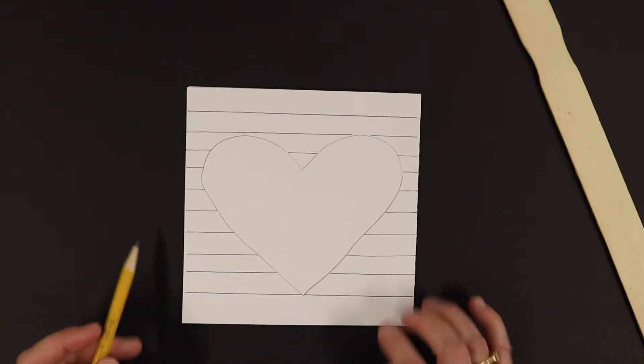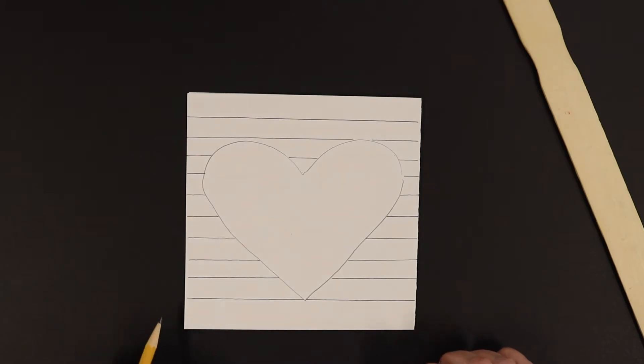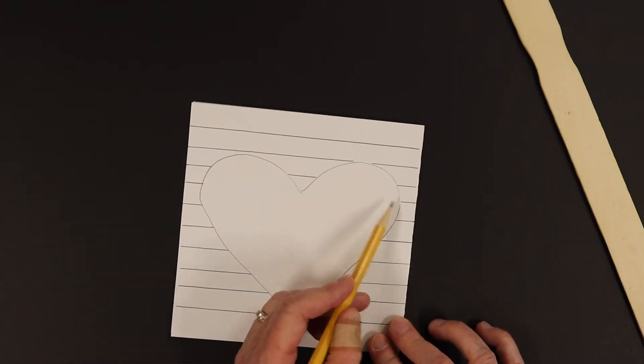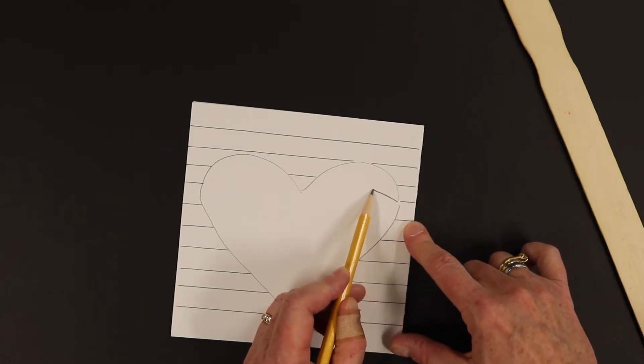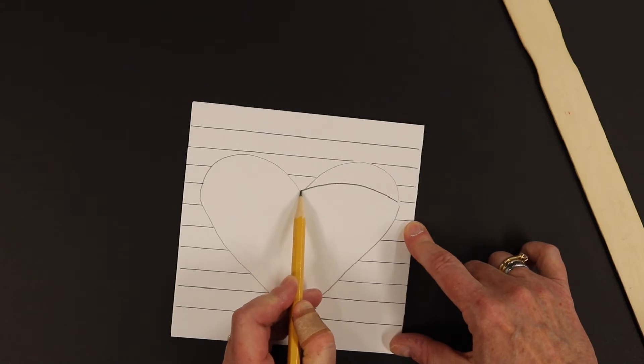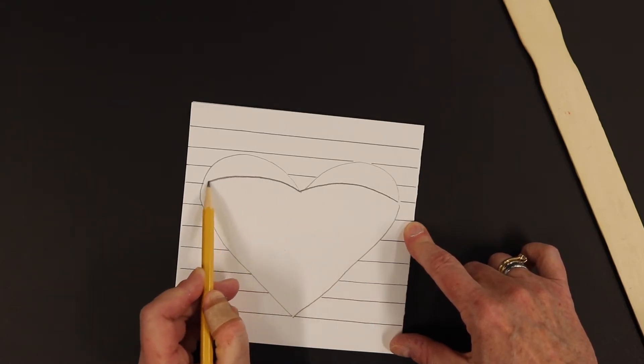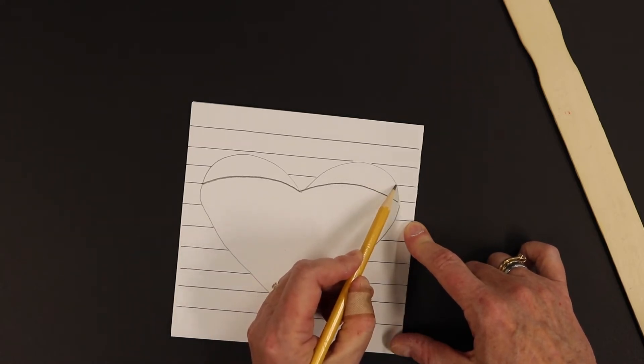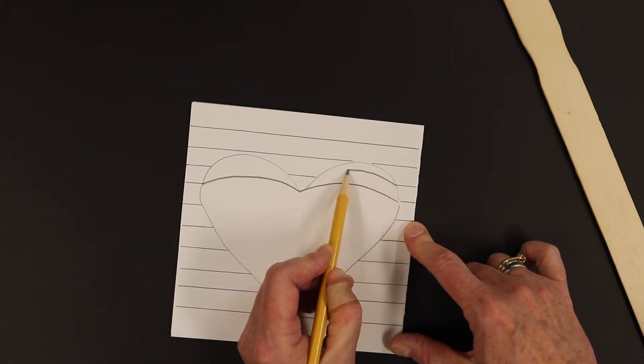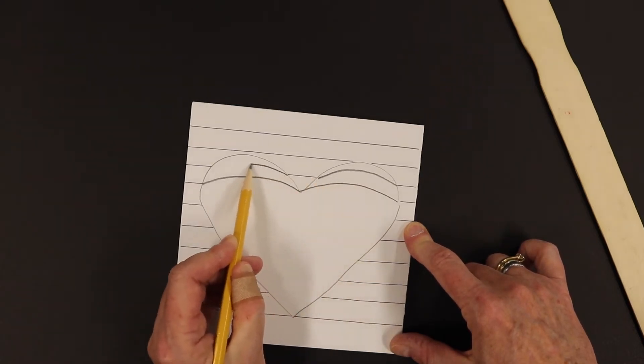Now we're going to, in order to make this heart look like it's three-dimensional and popping off the page, when we get to our heart, we're going to draw a curved line. So I'm curving my line, and this is really a hard thing to do, because when you're looking at it, you're thinking you're doing curved, but you might have to erase and try again.